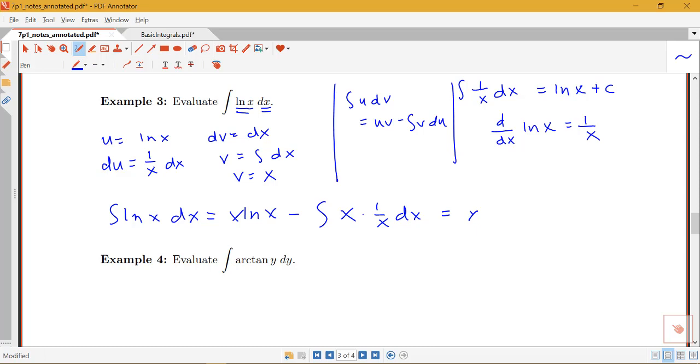So let's see how this simplifies. We have x log x minus an integral, when those x's cancel, of just dx, so we have x log x minus x, and then plus c for our final answer.